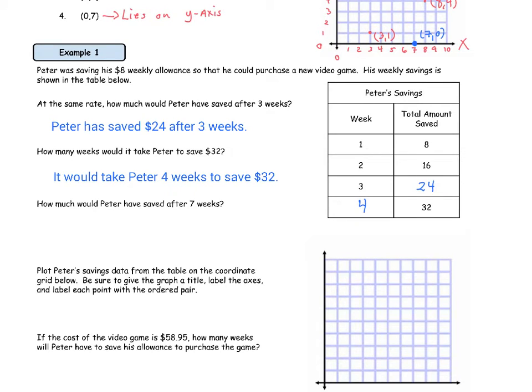The next question says, how much would Peter have saved after seven weeks? The way I answer this question is I like to extend my ratio table just one row more. We have seven weeks here. I like to use the multiplication relationship between equivalent ratios. I know that one times seven is seven. So whatever I have to do to the left side, I have to do to the right side to keep equivalent ratios. 8 times 7 is 56. So the question, how much would Peter have saved after seven weeks? Peter would have saved $56 after seven weeks.